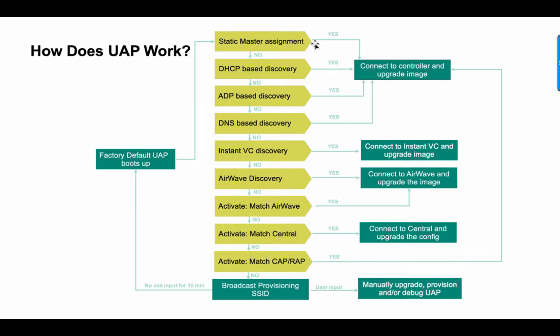If none of these things work, then in the end it starts broadcasting a Provisioning SSID. On that Provisioning SSID, you can connect and then manually, via a graphical user interface, turn the AP into an Instant AP or a Campus AP by uploading the right image to it. That's the manual way of provisioning a UAP.